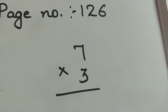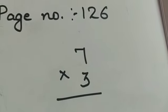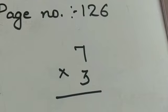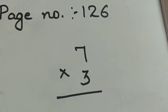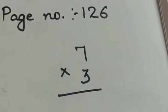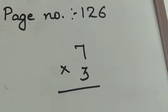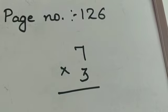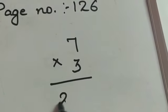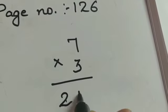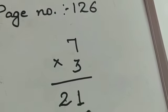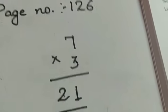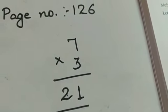Next, read the table of 3. 3 1's are 3, 3 2's are 6, 3 3's are 9, 3 4's are 12, 3 5's are 15, 3 6's are 18, 3 7's are 21. So 3 7's are 21, so 21 is your answer.